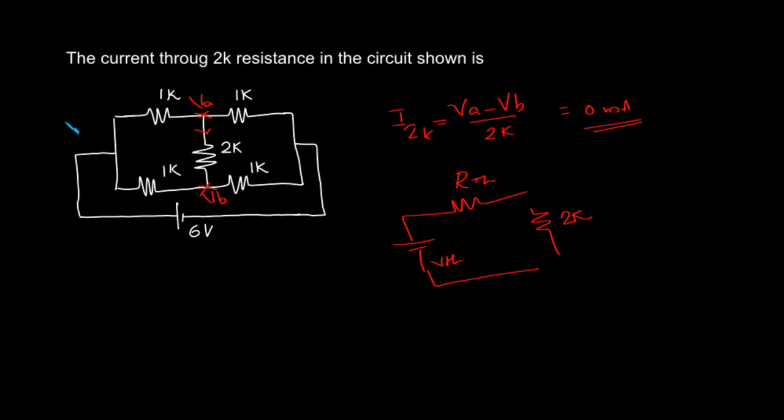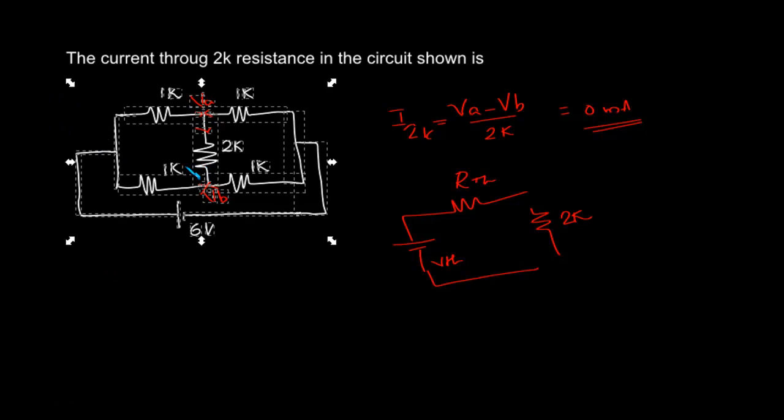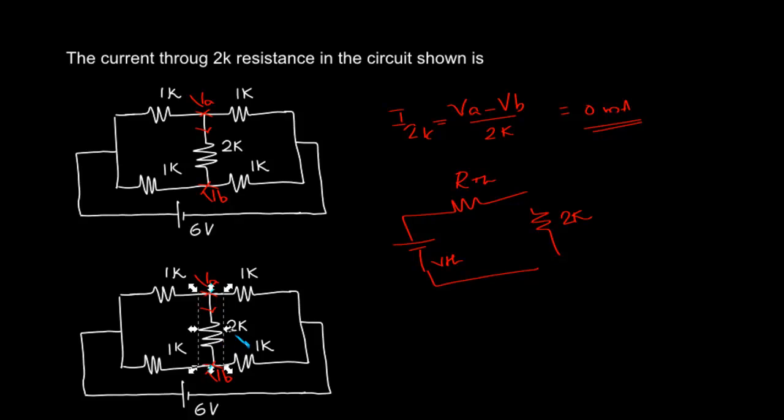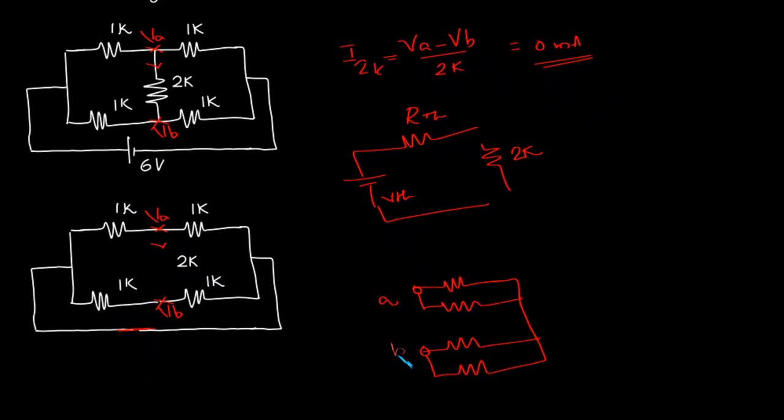To find out Thevenin's equivalent circuit, what we have to do? We have to open circuit the terminal. Now we have to find out what is the equivalent resistance. To find the equivalent resistance, we must short circuit. And we have to find out what is the equivalent resistance from the terminal A and B. This will be the equivalent resistance.